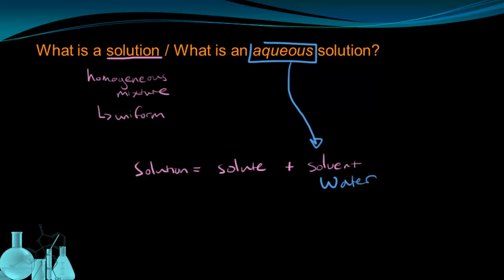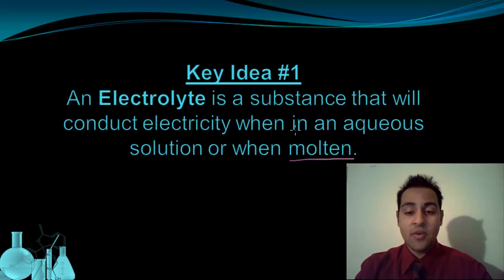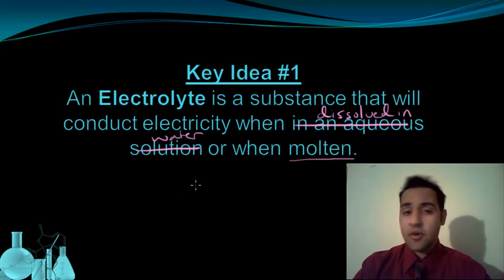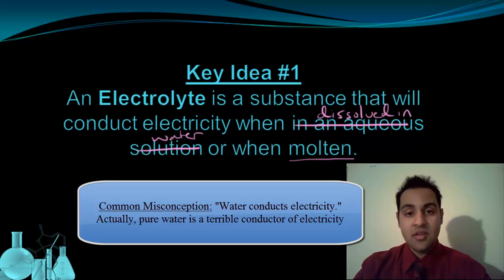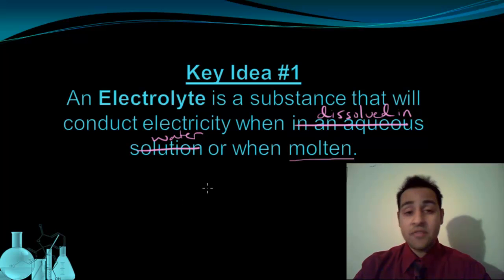So let's revisit our definition of electrolyte. An electrolyte is a substance that will conduct electricity when in an aqueous solution, or when dissolved in water. Now you may be wondering, doesn't water conduct electricity on its own? That's actually a big misconception. Pure water, if you took purified water, it turns out that it's an extremely poor conductor of electricity. Only if there's impurities or contaminants in the water do you get water that's able to conduct electricity.